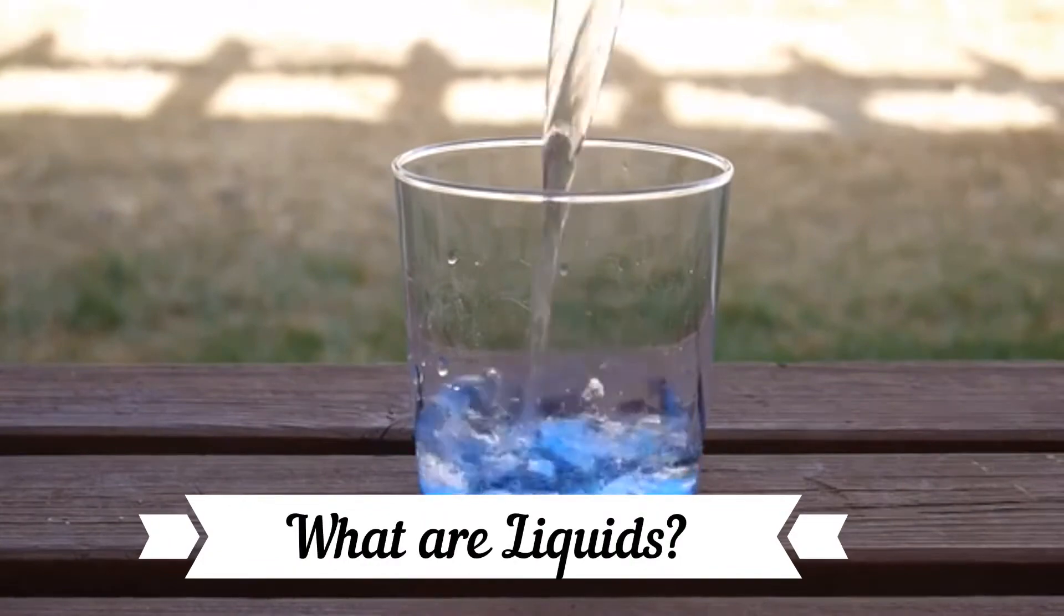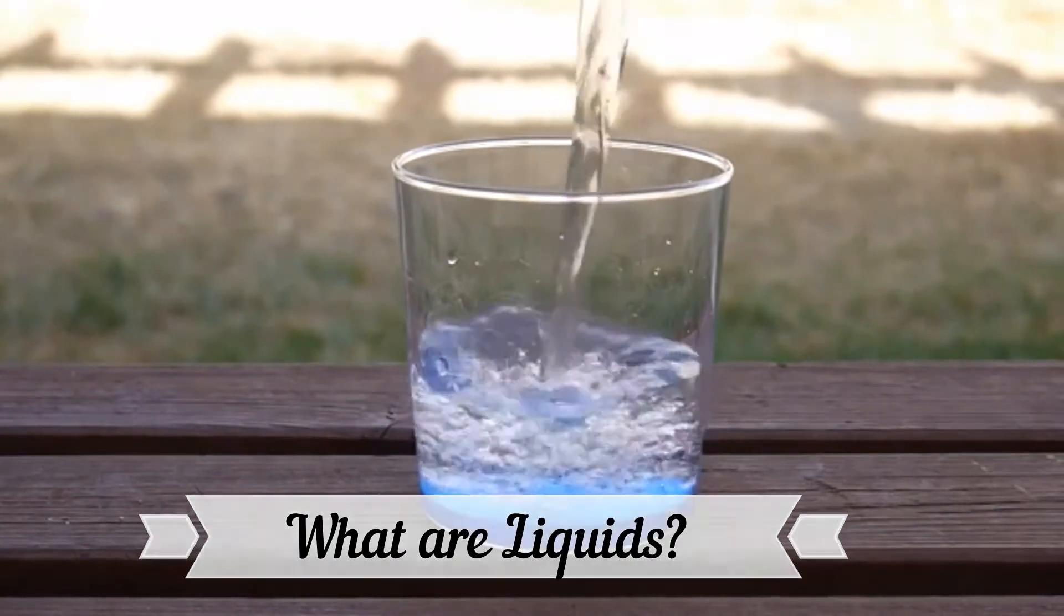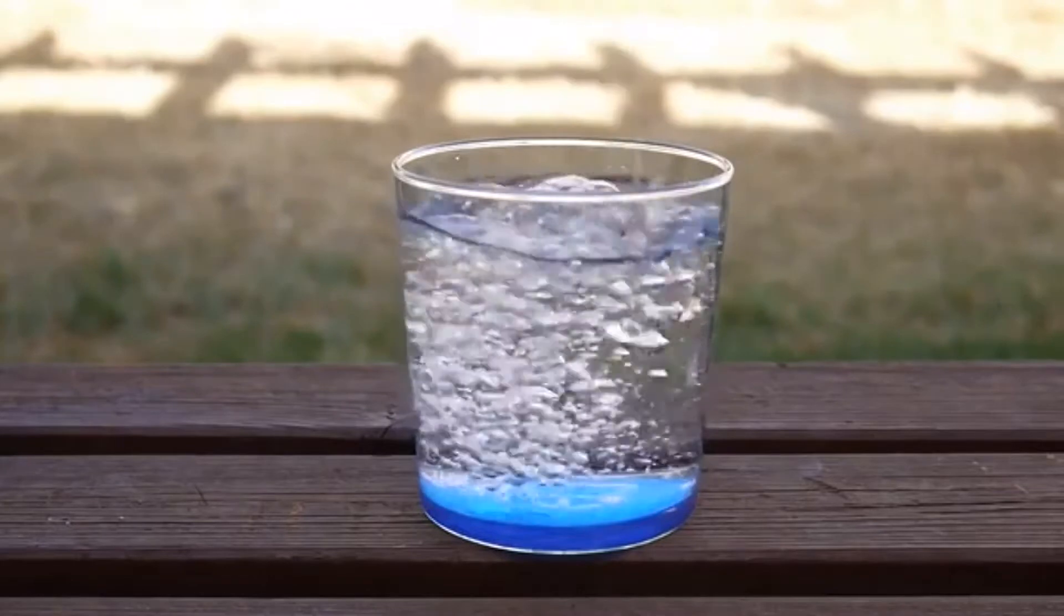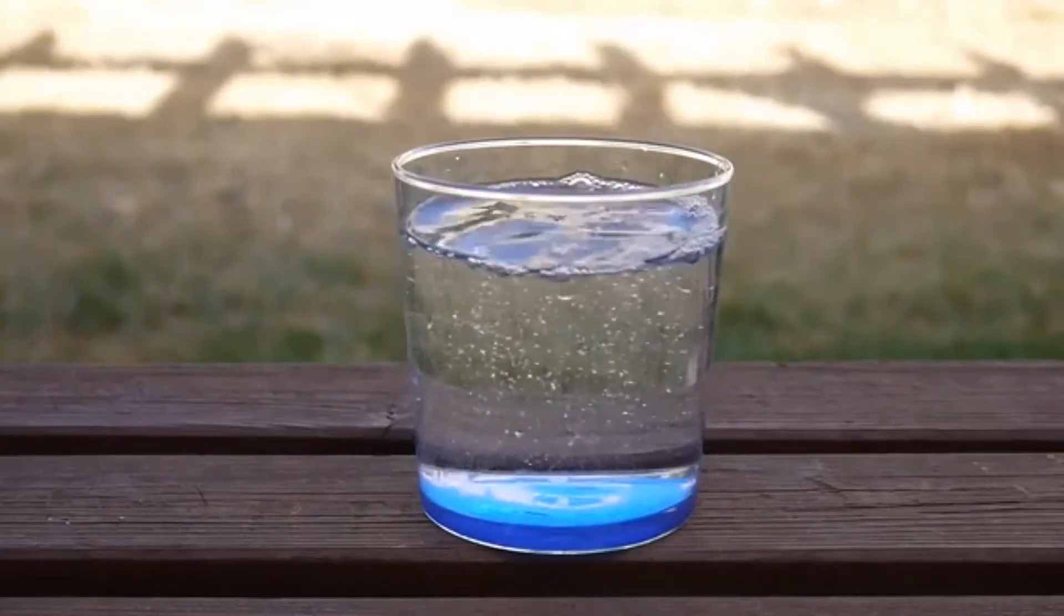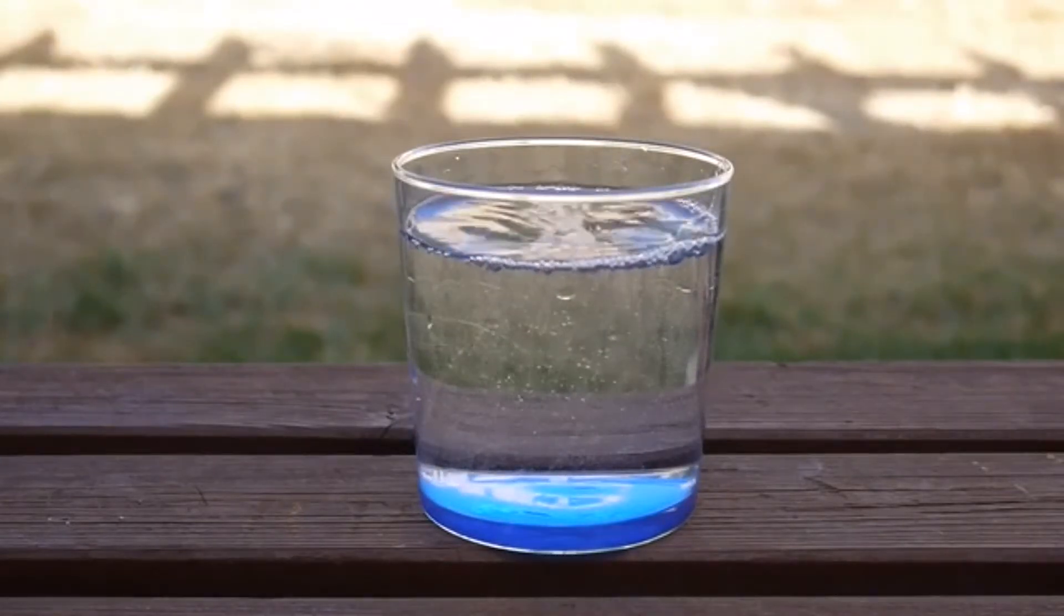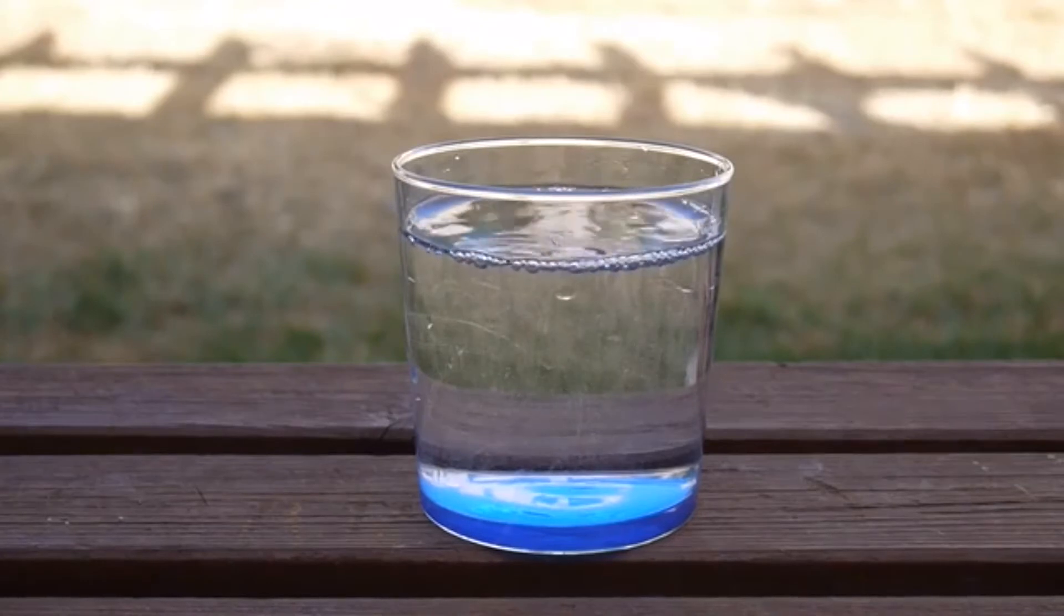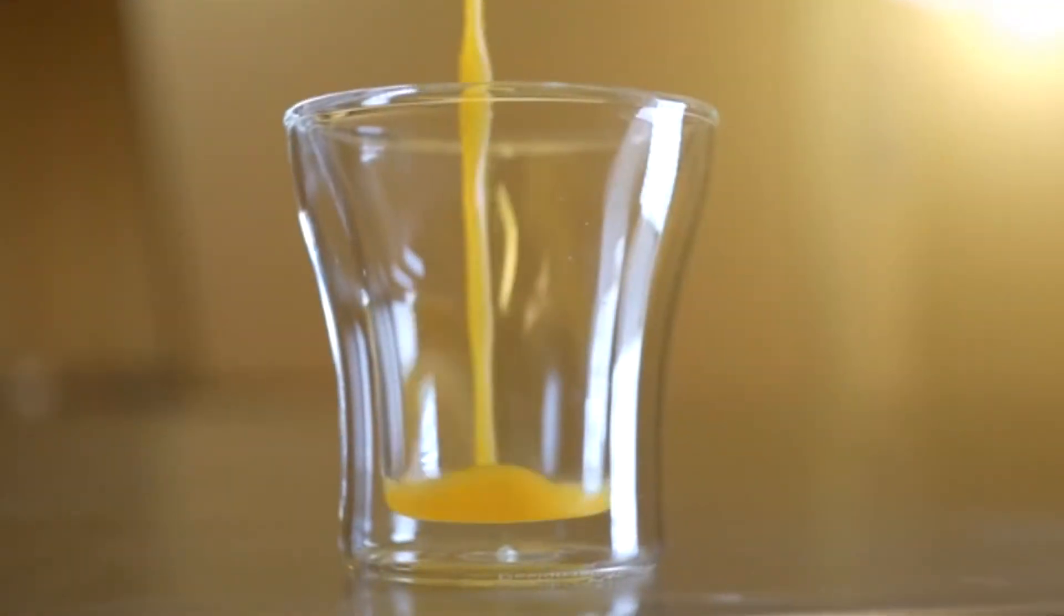What are liquids? In a liquid, the molecules are less tightly packed than in a solid. The molecules have more space between them and the force that they exert on one another is also less. This allows them to move about a little but they cannot move far away from each other. Therefore, liquids do not have a fixed shape. They take the shape of the container they are filled in.